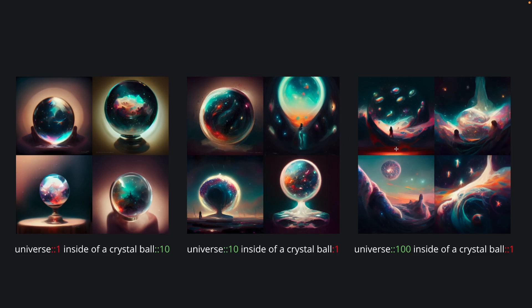Our third grid was a result of universe text weight 100 relative to 1 for crystal bowl, and the crystal bowl seems to have completely disappeared from the composition. We can see some circular-inspired depictions, but we wouldn't know it was a crystal bowl without seeing the text prompt. With the universe taking such a high relative text weight, the entire image is an environment of a different world in our universe, and largely ignores the second part of our text prompt — which was crystal bowl. I hope you can already see how text weights can be used to control our compositions.